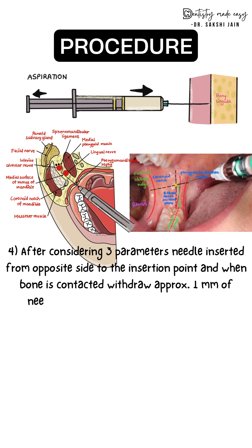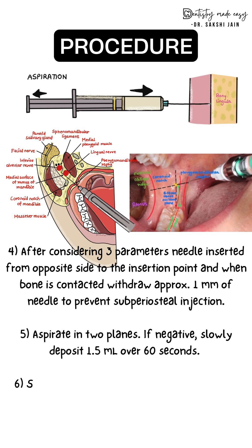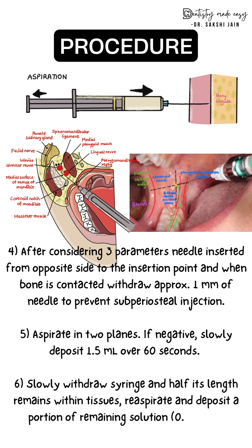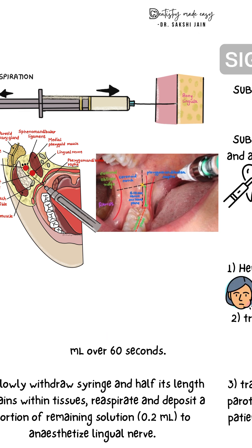Once all three parameters are met and the bone is properly contacted, aspirate in two planes. If negative, slowly deposit 1.5 ml over 60 seconds. If aspiration is positive — meaning you are hitting a vessel — discard the syringe and take a new one. Then slowly withdraw the syringe and re-aspirate; if negative, deposit 0.2 ml to anesthetize the lingual nerve. Withdraw the syringe, recap the needle safely, and wait 3 to 5 minutes before testing the block.